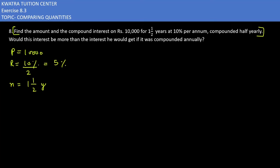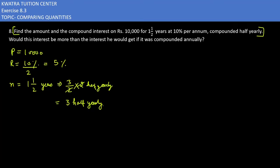For the time period, since it is one and a half years compounded half yearly, we convert one and a half years — that is three over two — and multiply by two. The twos cancel, giving us three half-year periods. So n equals three.